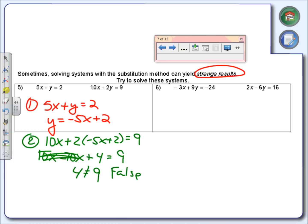And any time we have a false statement like that, we say that there is no solution. In other words, if we had graphed these two lines, what would have happened? They would have ended up being parallel, which is why we're having no solution.